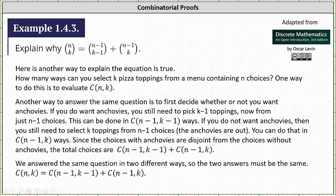You can do that in N minus one choose K ways. Since the choices with anchovies are disjoint from the choices without anchovies, the total choices are N minus one choose K minus one plus N minus one choose K.